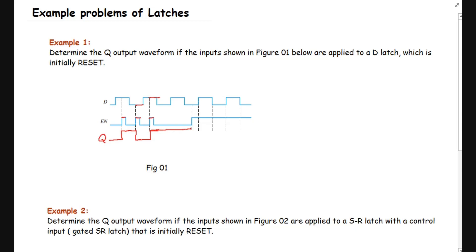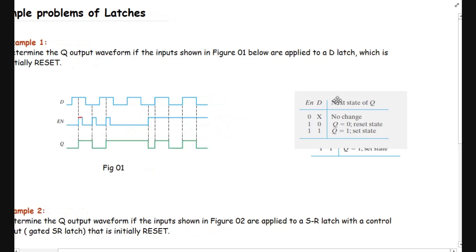If the enable signal is high for the entire time, whatever data is available will be totally transferred to Q. At this state we have a low Q, then a high Q because data is high, then data is low, then data is high, and so on. Drawing this waveform more neatly, this will be the final solution — the Q waveform given the D and enable waveforms.